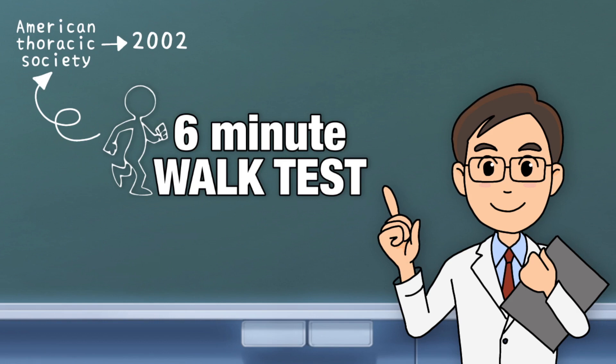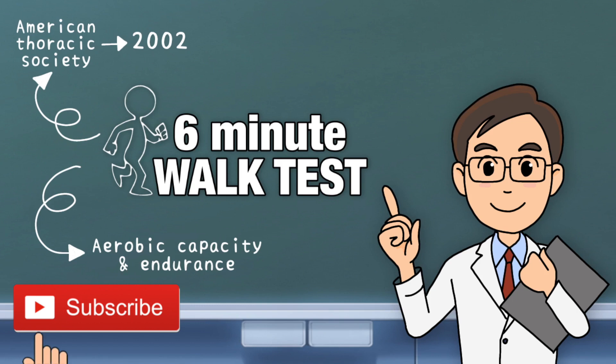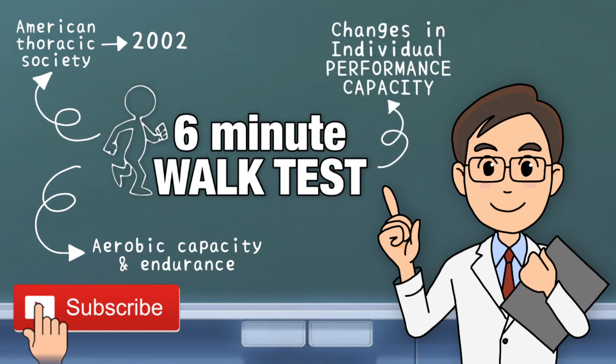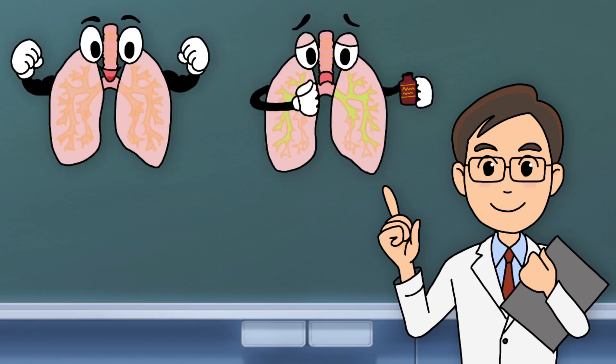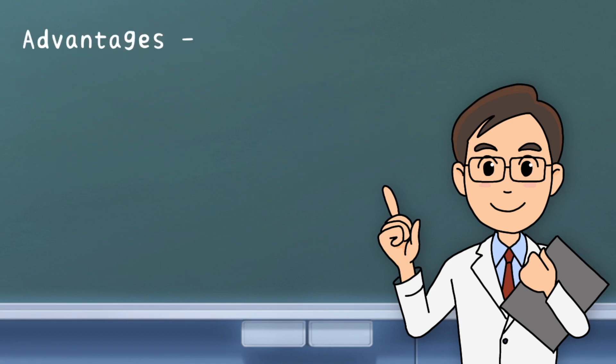It is a submaximal exercise test used to assess the aerobic capacity and endurance of an individual. It's basically the measurement of distance covered in 6 minutes that is used as a baseline by which comparative changes in a patient's performance capacity are made. This means that it helps us compare whether an individual's lung function as well as other physical parameters have improved or deteriorated.